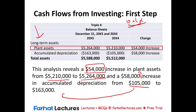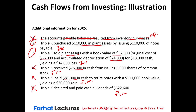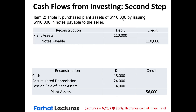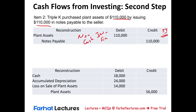When you are given additional information, you have to analyze each set of information separately, starting with Item 2. In Item 2, we purchased a plant asset of $110,000 by issuing a note — so we debit plant asset and credit notes payable. This is a non-cash investing and financing activity. Plant asset is an investing activity; notes payable is a financing activity. This transaction has no cash effect on the cash flow statement, but we will have to disclose it.